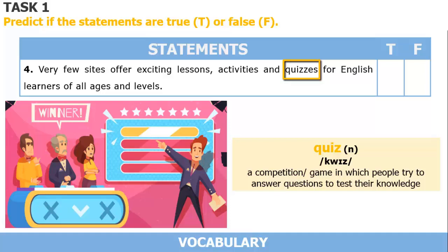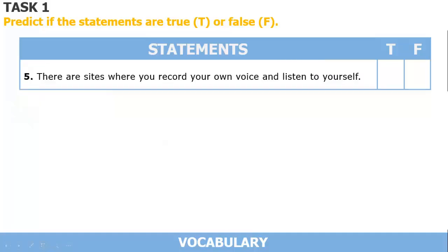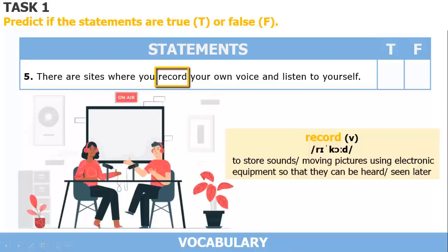In Vietnamese, it means 'Cuộc thi độ vui.' And the last sentence — we pay attention to the word 'record.' It means to store sounds or moving pictures using electronic equipment so that they can be heard or seen later. Its Vietnamese meaning is 'Ghi âm, ghi hình.'